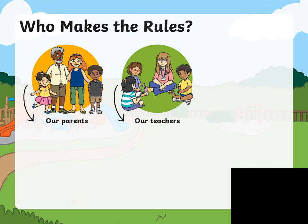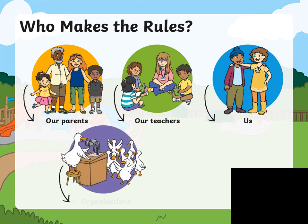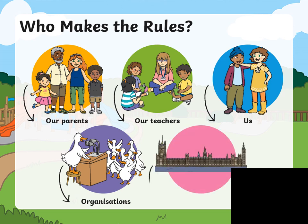Who makes the rules? Rules can be made by our parents, our teachers, or us. We also can agree on our own rules because we are responsible enough to know the rules and to know how to follow them. Organizations also always have rules, and the government of course.